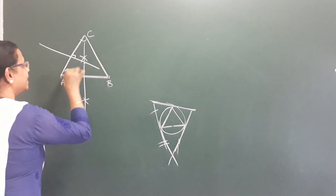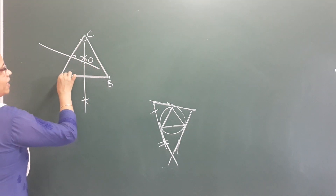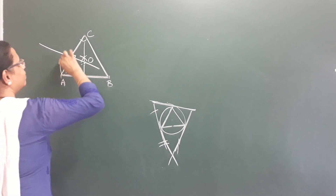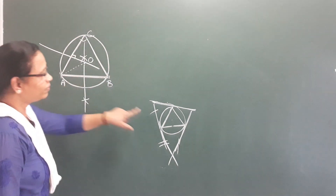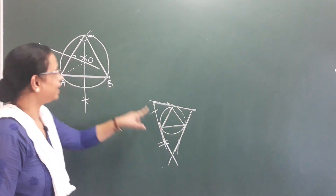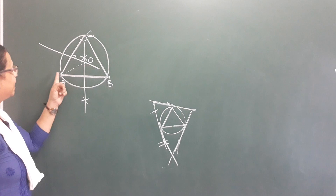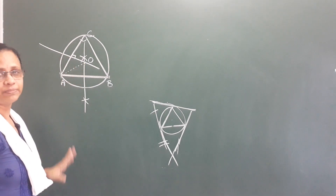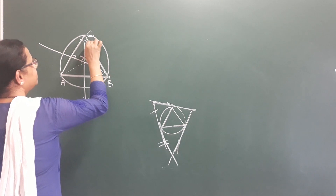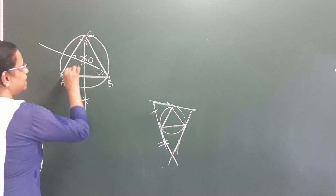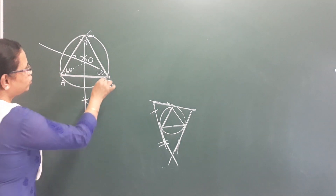This perpendicular bisector meets this point. This point is the circumcenter. This distance — O is a radius. This O is a radius, this O is a radius. This circle is a circumcircle — circumcircularity, circumcentrality. This is 60, this is 60, this is 60. This circle has 3 points.